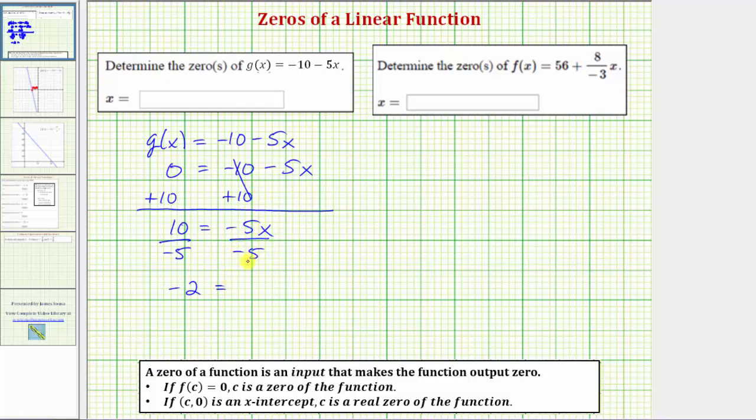On the right side, dividing by negative five undoes multiplying by negative five, so this simplifies to just x. Or negative five divided by negative five is one, one times x is x. So now we know our zero is x equals negative two. The input value or x value of negative two makes the output or function value equal to zero.